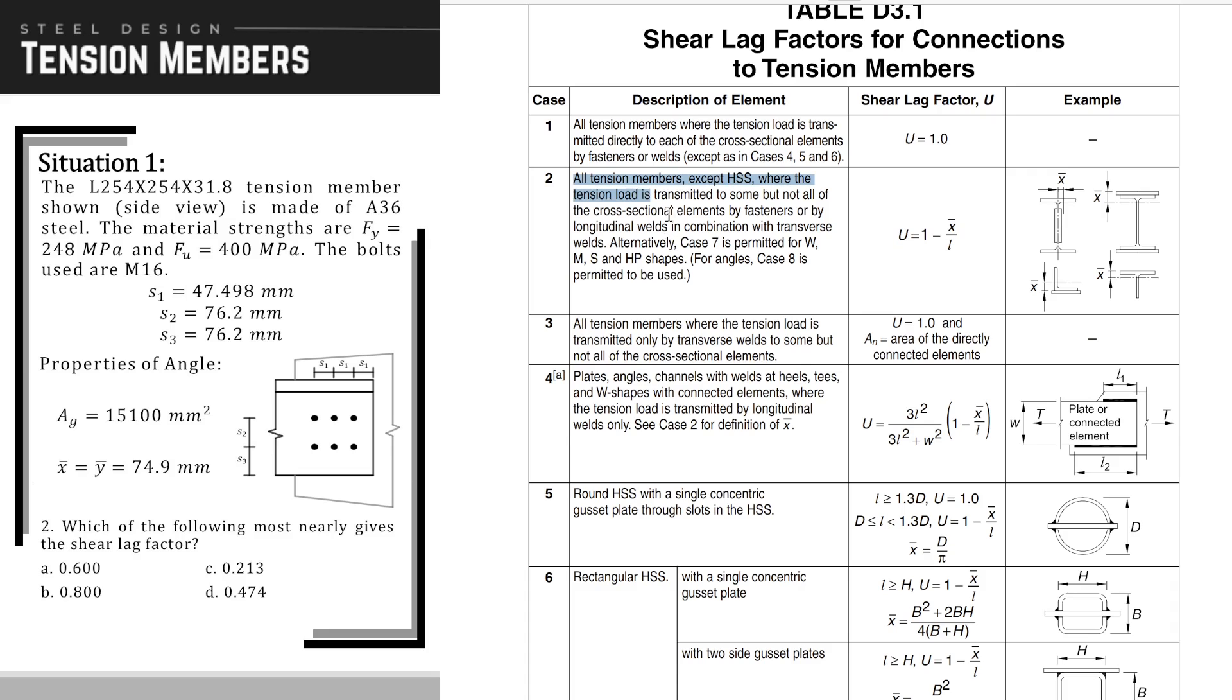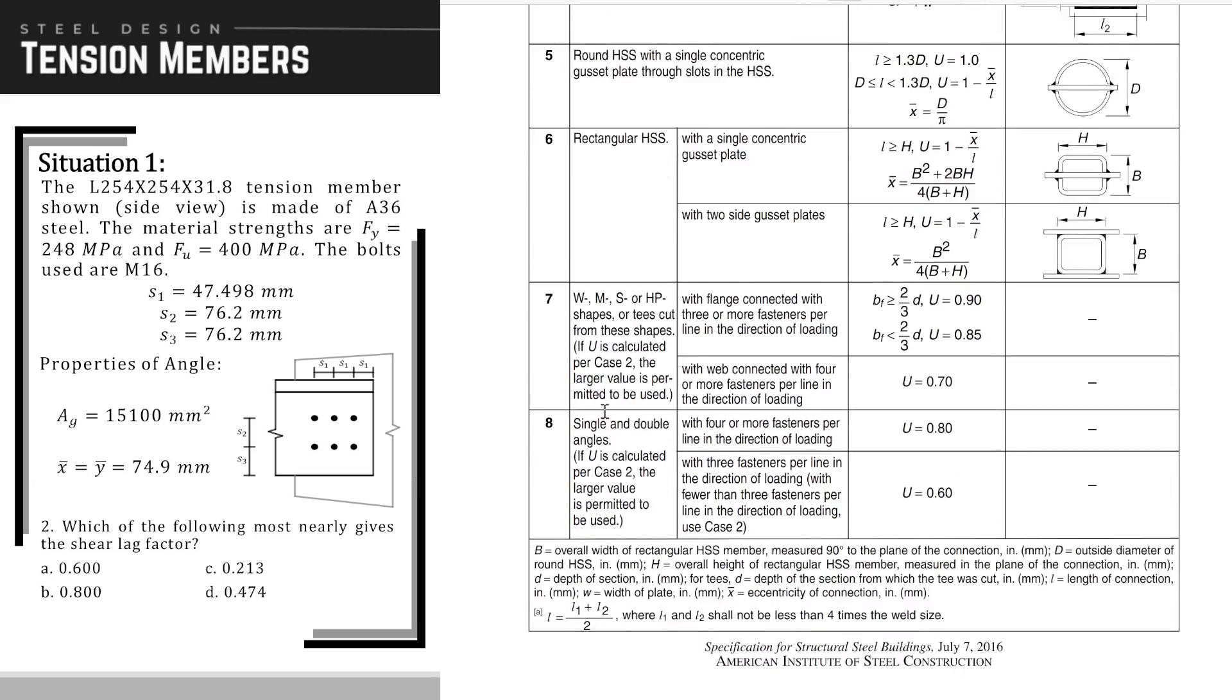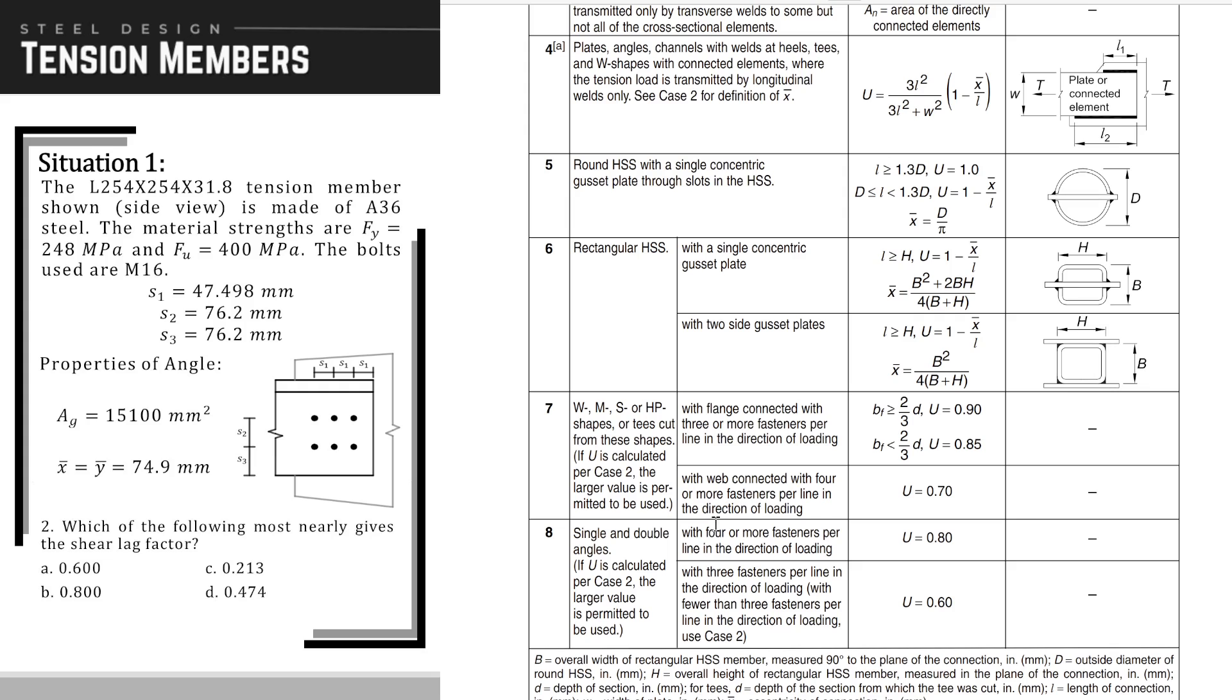We can use case 2. But take note, as we read the description of case 2, you will find at the last part of the paragraph that for angles, case 8 is permitted to be used. So for our problem, we can also use case 8 aside from case 2. Looking at case 8, we have two corresponding shear lag factors. We're going to identify which among the two does the problem belong. We will read this: with four or more fasteners per line in the direction of loading.